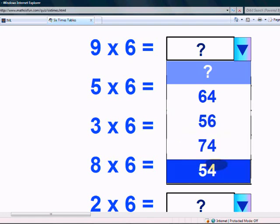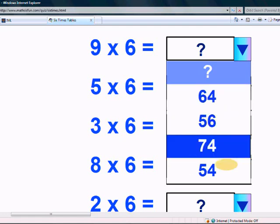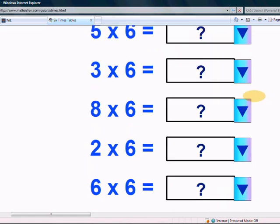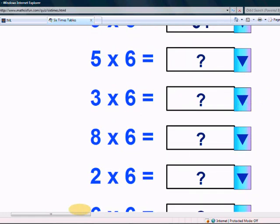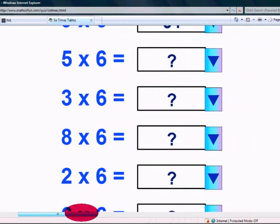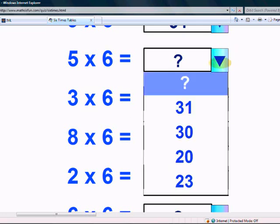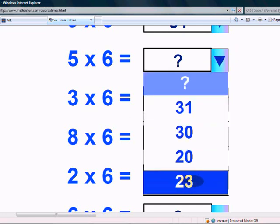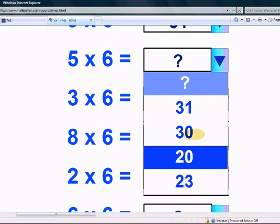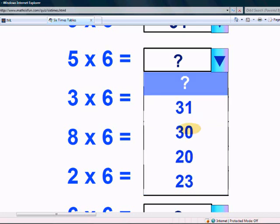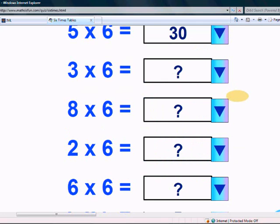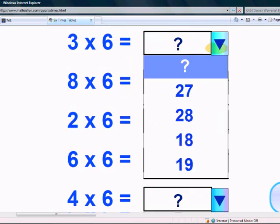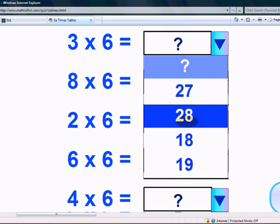What does 5 times 6 give? Is it 31, 30, 20, or 23? Yes, it is 30. What does 3 times 6 give? 27, 28, 18, or 19? Bingo, 18!